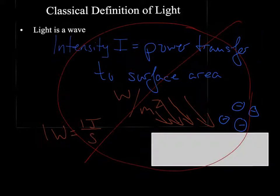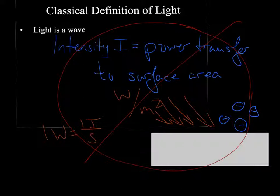It wasn't the case that by increasing intensity we can increase photoelectric current. So what that motivated was scrapping this theory — not the definition of intensity, but the idea that increasing intensity will increase the photo-emitted current. What scientists found instead was that by changing the energy of the light shining incident upon the surface of the metal, rather than the intensity, they were able to change the photocurrent, which led to a different model of thinking about this phenomenon.